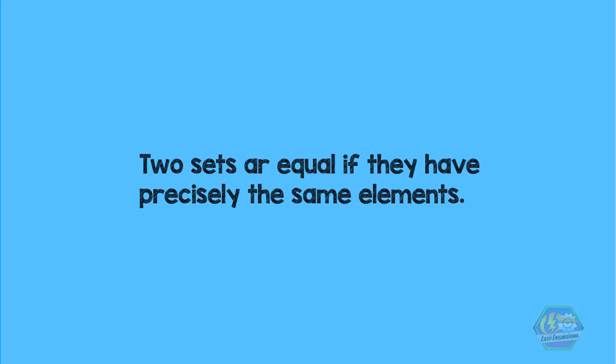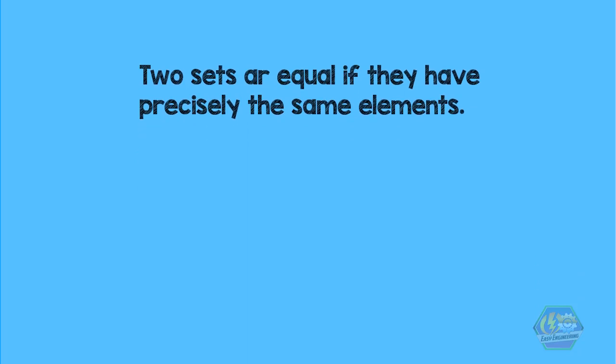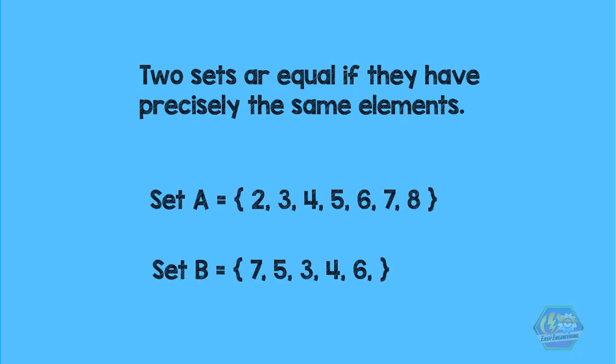Two sets are equal if they have precisely the same elements. This pertains to the equality of sets, but some sets may not look equal at first glance. Let us take this for example. Are A and B equal where A is the set of all positive integers between 2 and 8, and B is equal to the set of 7, 5, 3, 4, and 6? Let's check.